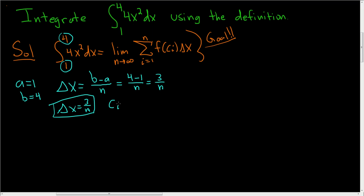Then I like to write down c sub i. This is the right endpoint. So it's a plus i delta x. a in this problem is 1 plus i times delta x, which is 3 over n. Let me write it again over here. So c sub i is equal to 1 plus 3i over n. So there is our c sub i.